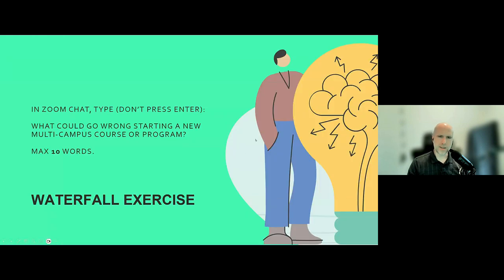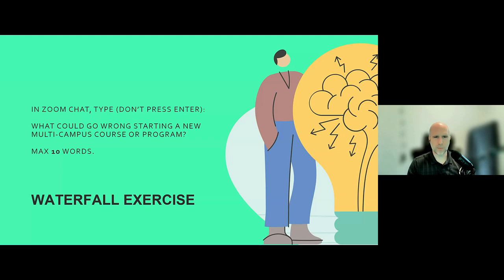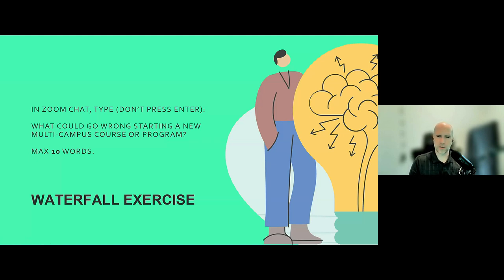Bearing all this in mind and considering the complexity around community, we're going to do a quick Zoom waterfall activity. I'm going to ask you: what could possibly go wrong in a situation like this? In 10 words or less, write something into the Zoom chat—don't hit enter yet—and then I'll ask everyone to press enter at once. We'll see what comes to mind in terms of potential challenges around fostering community and running such a course.